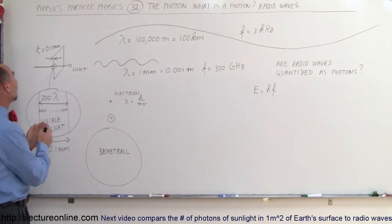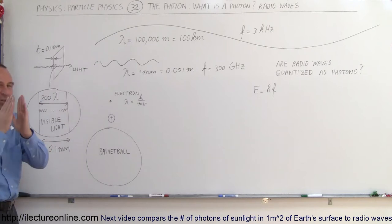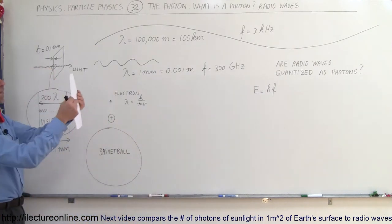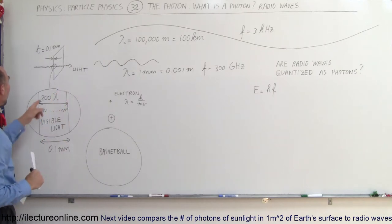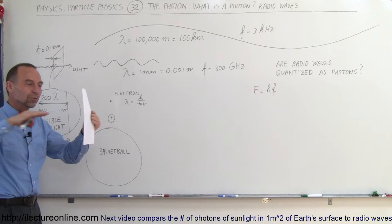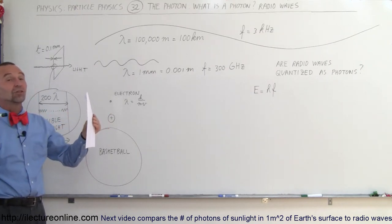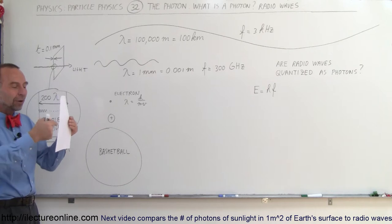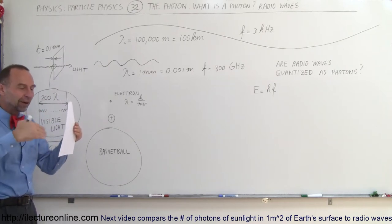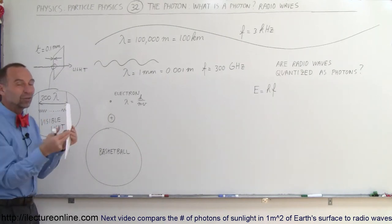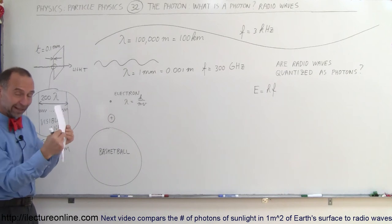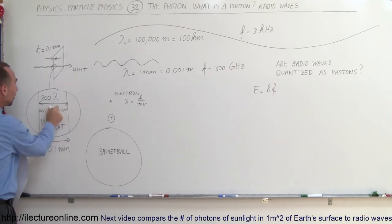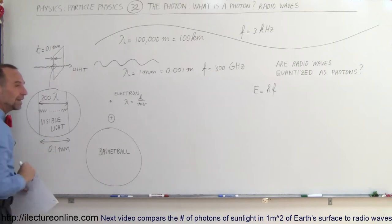If we go back and take a look at visible light rays, imagine a piece of paper and look at it edge-on. The width or thickness of a piece of paper is about one-tenth of a millimeter. As light zooms by at 186,000 miles per second, while passing by that width, light will go up and down 200 times. There are 200 wavelengths of light as it passes by the 0.1 mm thickness of a piece of paper.